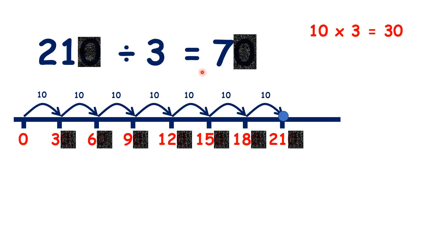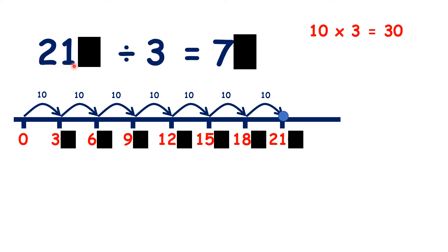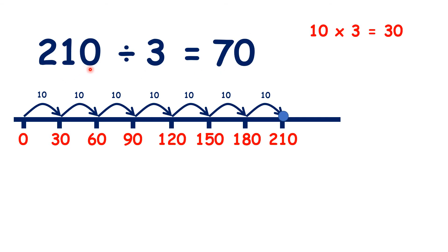Again, we can see that if we know that 21 divided by 3 is 7, then 210 — that's 21 tens — divided by 3 is 7 tens. So 210 divided by 3 is 70.